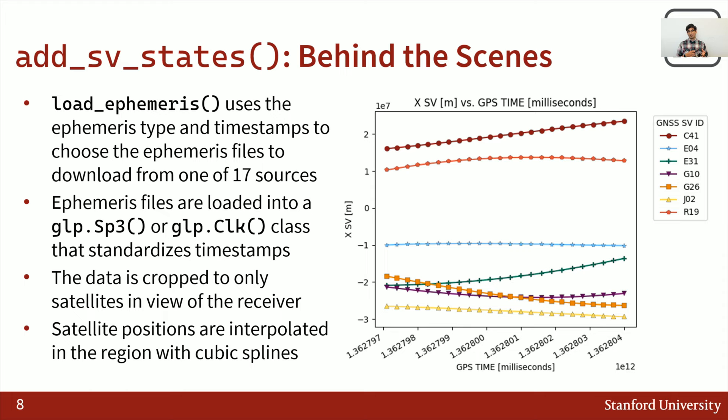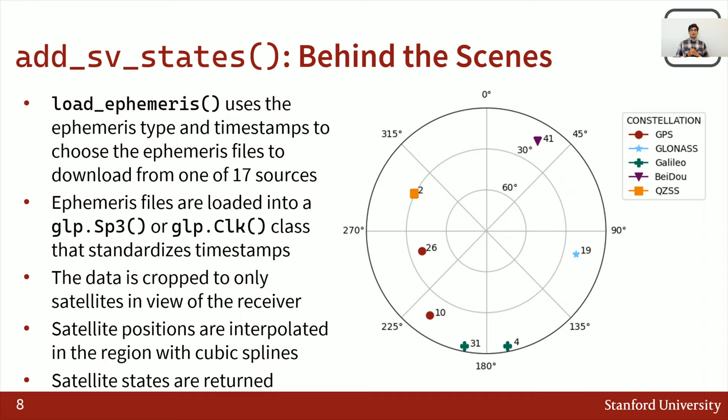So in this case, we query for the GPS millis from the measurements and get the satellite states for that time, shown as a skyplot from this location. This is a short overview of what happens behind the scenes when you call addSVStates with precise ephemeris. The process is more or less similar when using broadcast, except different algorithms are used to calculate the SV states — positions, velocities, clock bias, and clock bias drift rate.